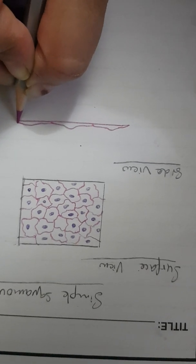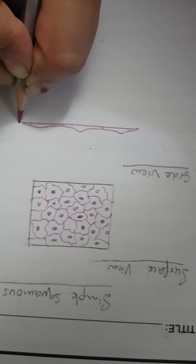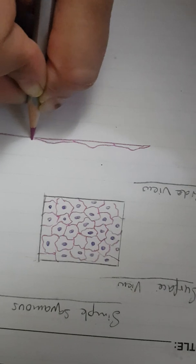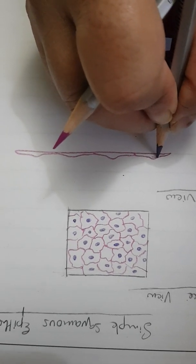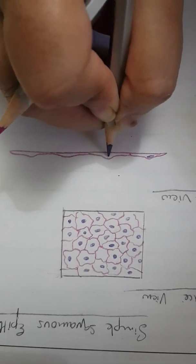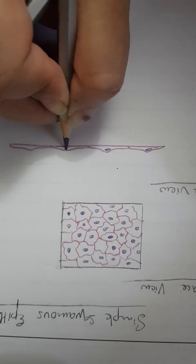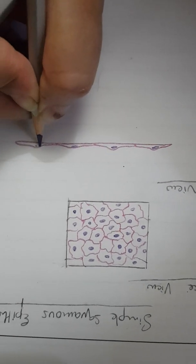The bulge in the center here - this bulge is for the nucleus which is ovoid or flattened.